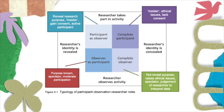A researcher conducting the observation method can choose to play various roles. The first is the researcher as a complete participant, whereby you may use this method when you are already an insider in a particular organisation or social setting. You usually don't inform others of your purpose as an observer, and this may raise ethical issues as you have lacked consent from the participants — you may be viewed as a spy. Researchers should not adopt this role where the focus of the research may result in risk to individuals with the potential to cause embarrassment or harm.